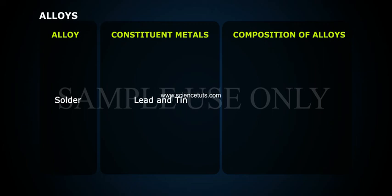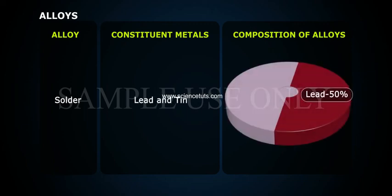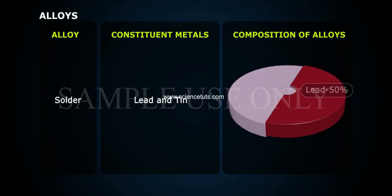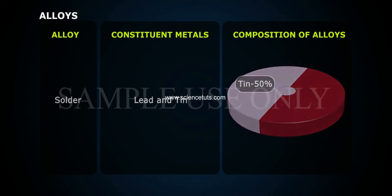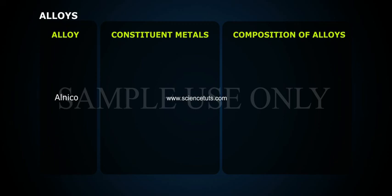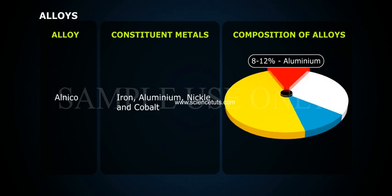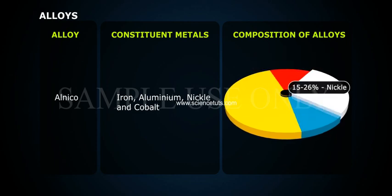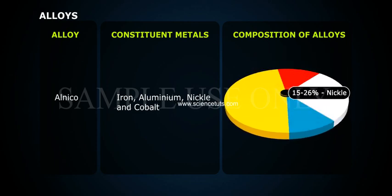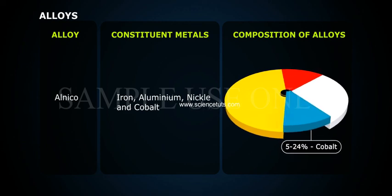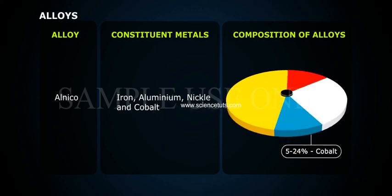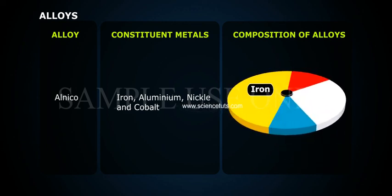Solder is composed of lead and tin — lead 50% and tin 50%. Alnico is composed of iron, aluminium, nickel, and cobalt — 8–12% aluminium, 15–26% nickel, 5–24% cobalt, and the balance is iron.